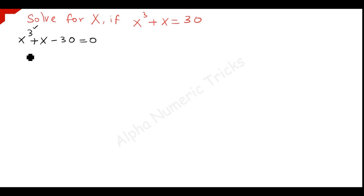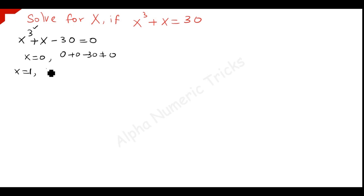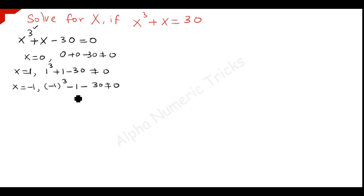First we have to find out one solution for this problem by using the trial and error method, by giving values to x. Put x equal to 0, you get 0 plus 0 minus 30, which is not equal to 0. When you substitute x equal to 1, you have 1 cubed plus 1 minus 30, which is also not equal to 0. When you substitute x equal to minus 1, minus 1 cubed minus 1 minus 30, which is also not equal to 0. We do this because any value of x which satisfies the equation is known as the solution for that equation, so we find one solution using trial and error.